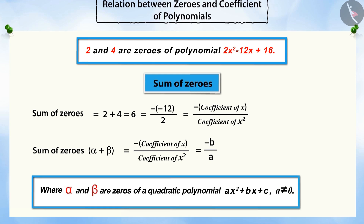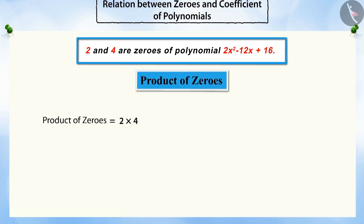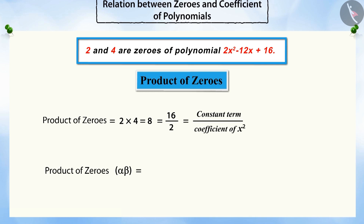Where alpha and beta are the two zeros of the quadratic polynomial AX squared plus BX plus C. Similarly, if we multiply the zeros, you will see that the product of the zeros is equal to the ratio of the constant term to the coefficient of X squared of the quadratic polynomial.